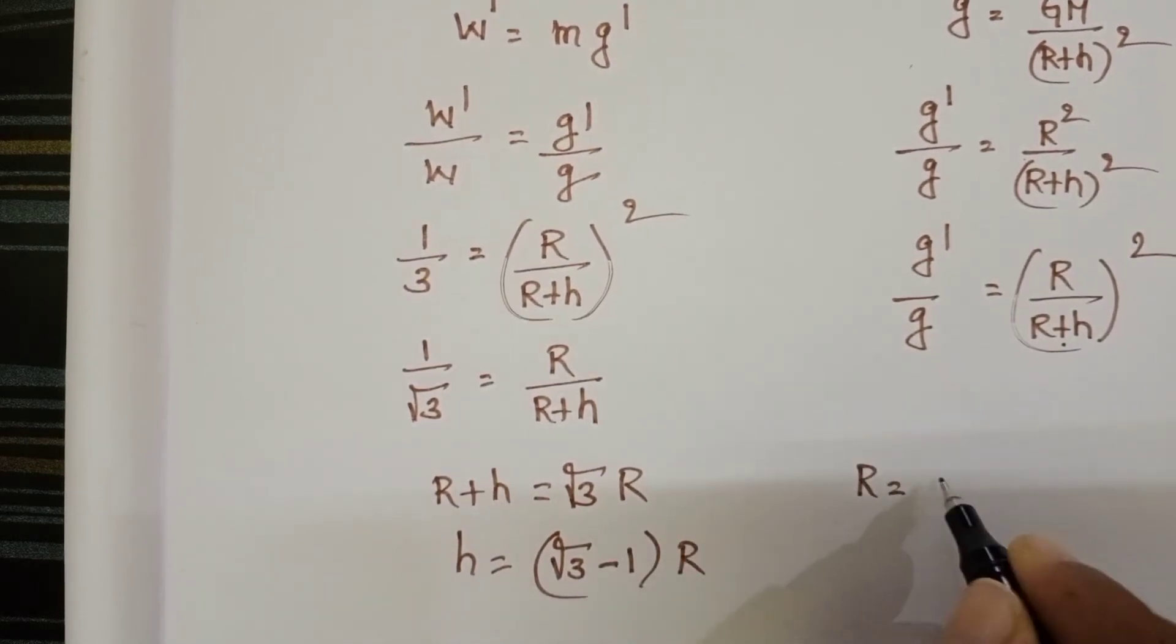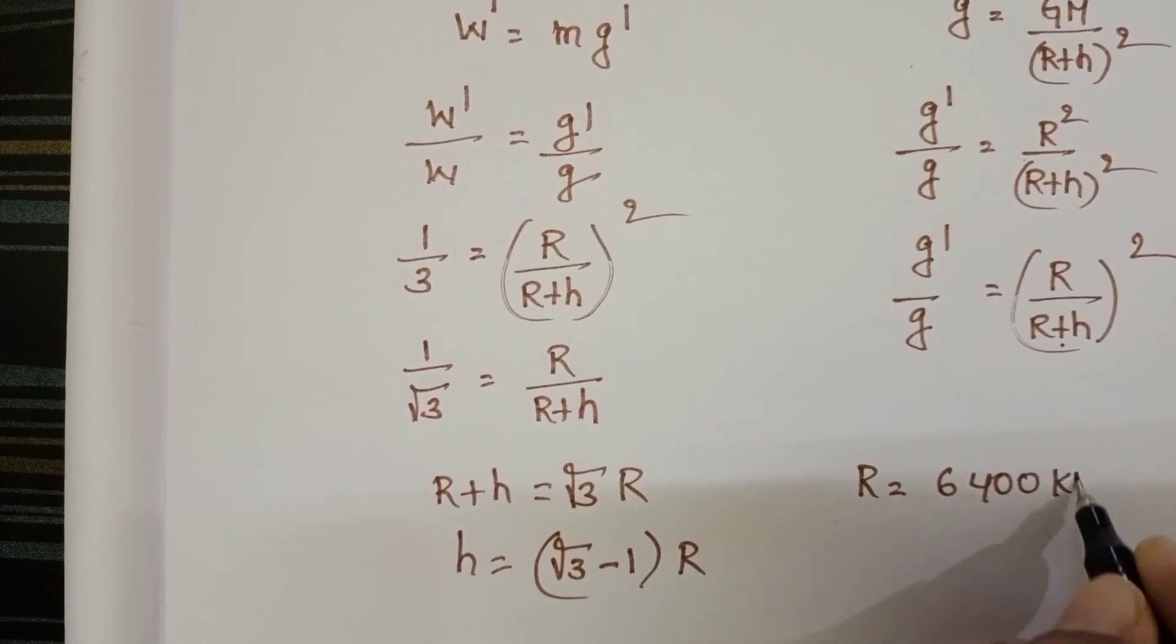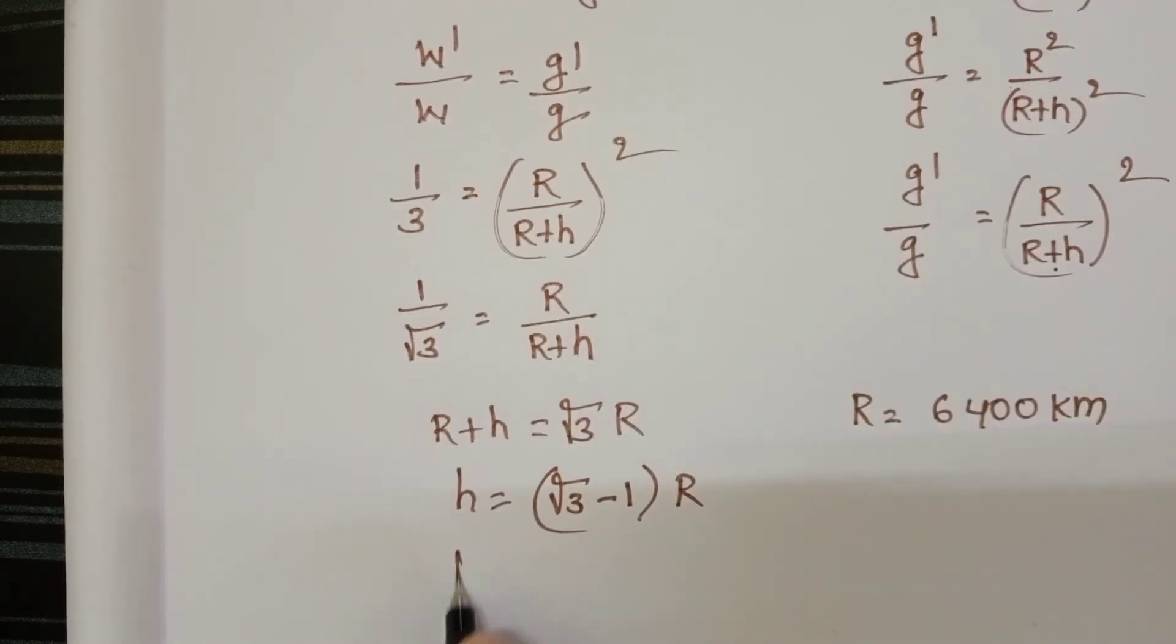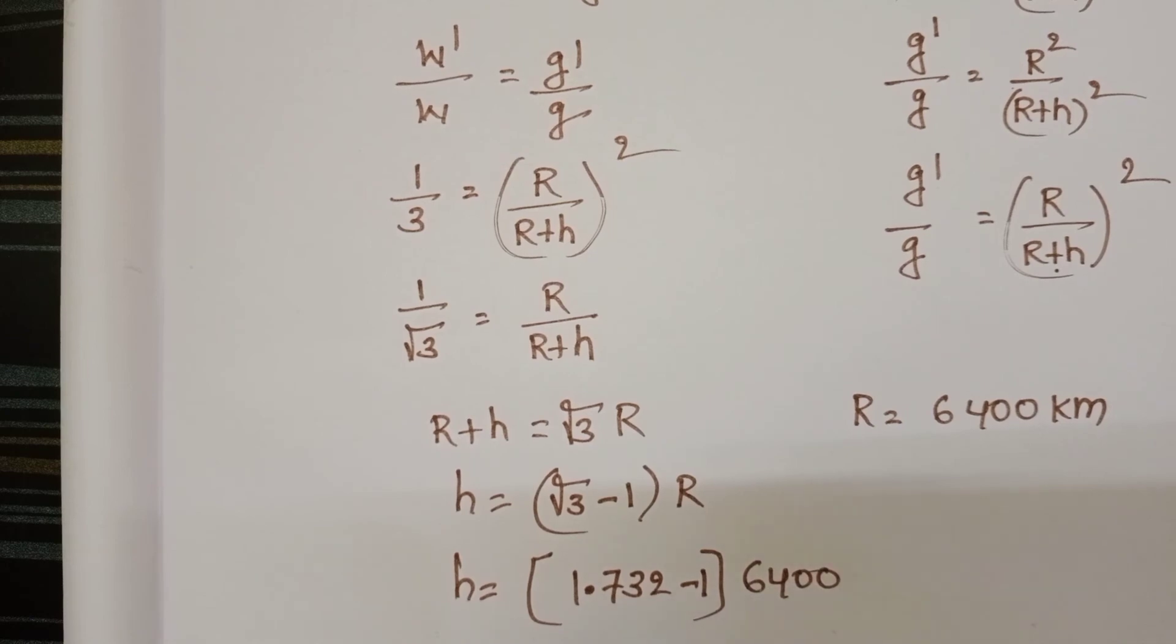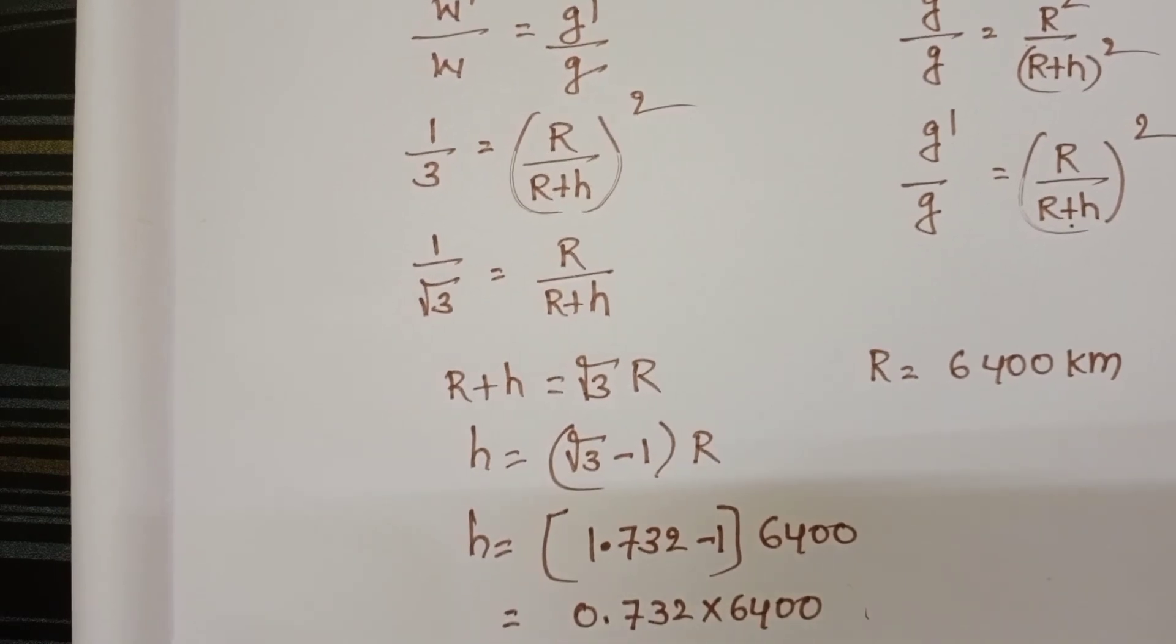Radius of the earth is 6400 kilometers. h equals 1.732 minus 1 times 6400, so 0.732 times 6400.